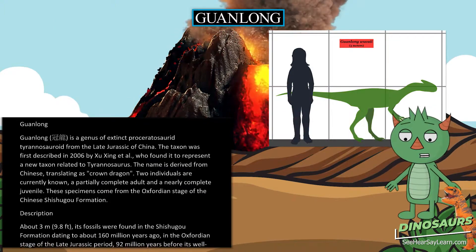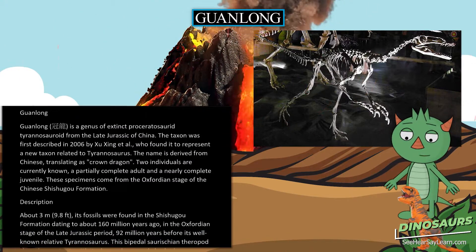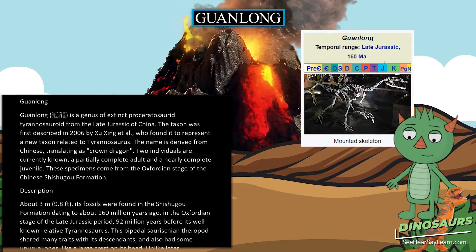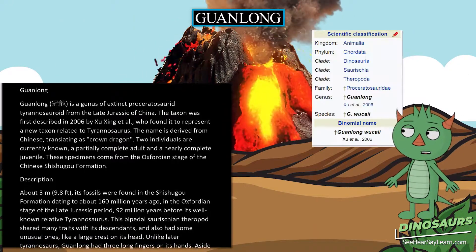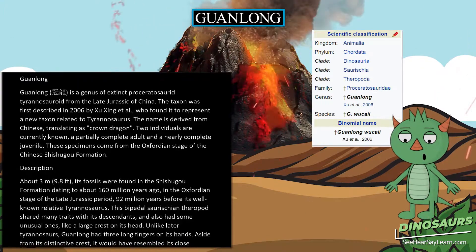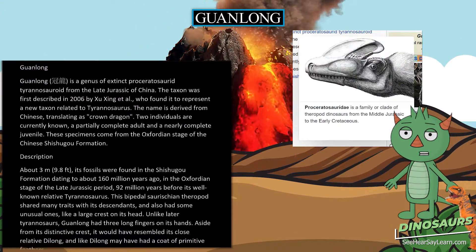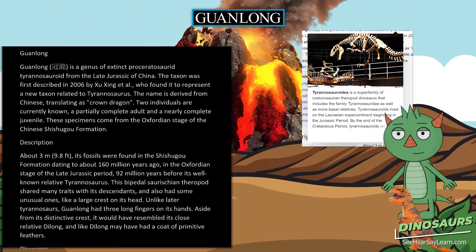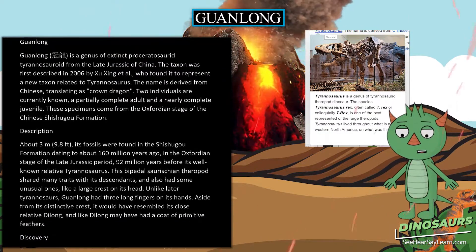Guanlong is a genus of extinct proserratosaurid tyrannosauroid from the Late Jurassic of China. The taxon was first described in 2006 by Xu Xing et al., who found it to represent a new taxon related to Tyrannosaurus. The name is derived from Chinese, translating as 'crown dragon.' Two individuals are currently known: a partially complete adult and a nearly complete juvenile.